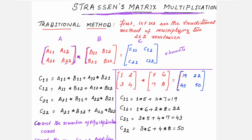Let us see how we normally carry out the multiplication using the traditional method. C11 is computed by multiplying the elements of the first row of the first matrix with the elements of the first column of the second matrix. So we get A11·B11 + A12·B21.